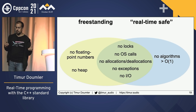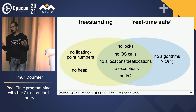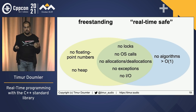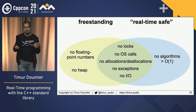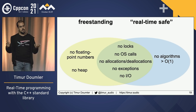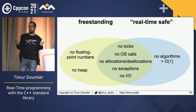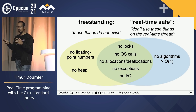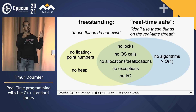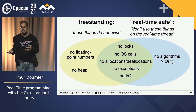There is an overlap: in both cases you don't want to use locks, you don't want to allocate or deallocate dynamic memory, do I/O, or use exceptions. But it's still not quite the same. On a bare-metal system you often don't have floating point or a heap; whereas for real-time audio or games you do have these things. The biggest difference: freestanding says 'these things do not exist on this system', whereas real-time says 'these things exist on this normal C++ implementation, but you're just not supposed to use them on the processing thread'.